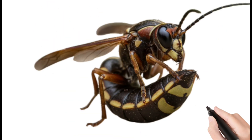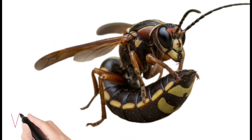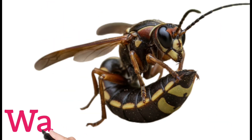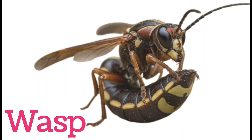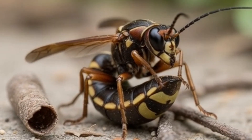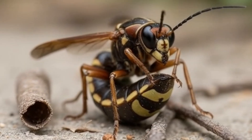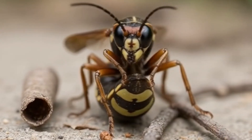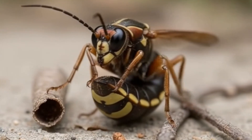Wasp. A wasp is a flying insect with a narrow body. It can sting to defend itself. Wasps feed on insects and nectar.